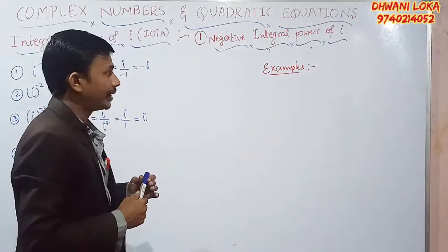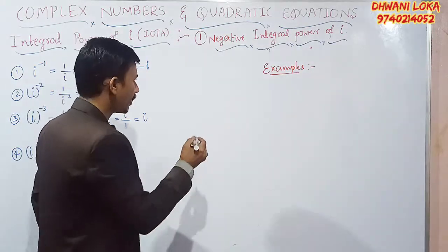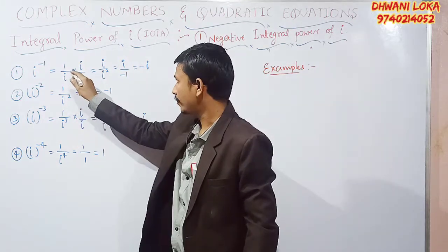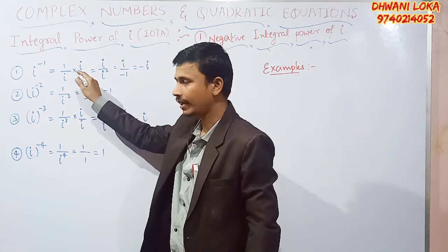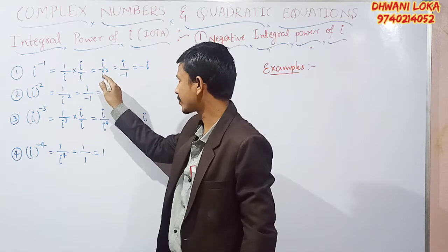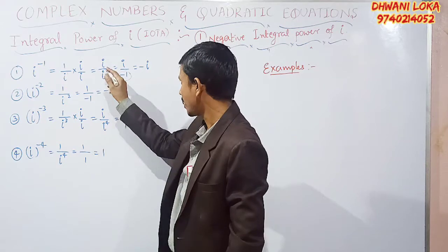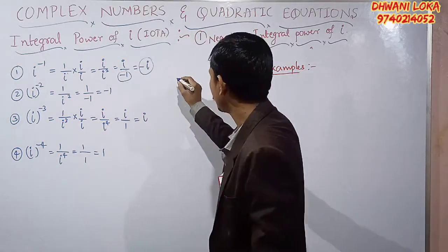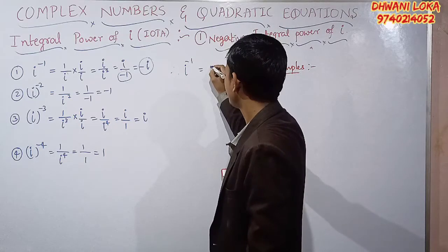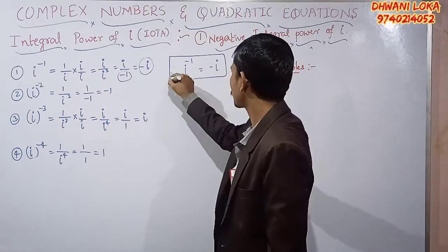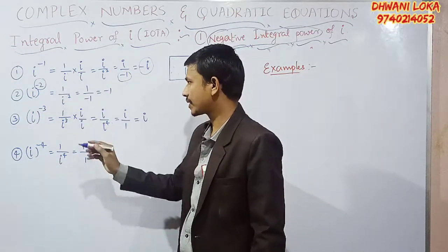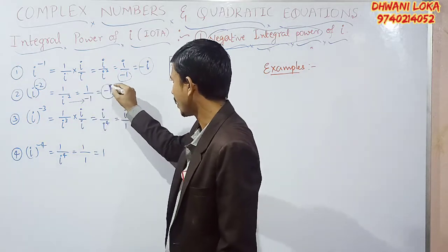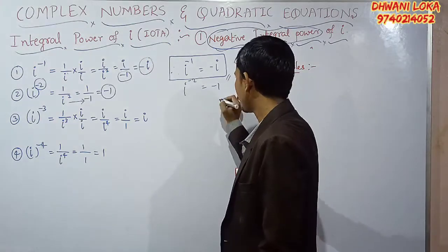Now the negative integral power of i. i to the power minus 1 can be written as 1 divided by i. Multiplying numerator and denominator by i: the numerator becomes i, the denominator becomes i squared which is minus 1. So i divided by minus 1 equals minus i. Therefore i to the power minus 1 equals minus i. Next, i to the power minus 2 equals 1 divided by i squared equals 1 divided by minus 1 equals minus 1.